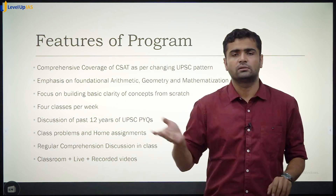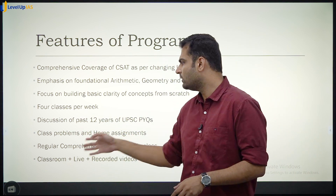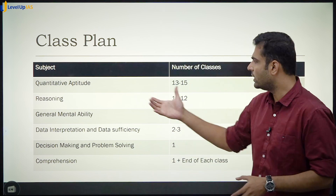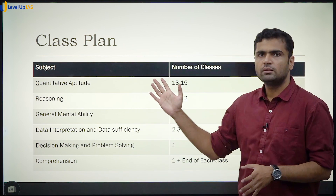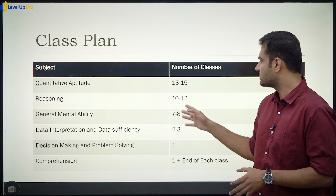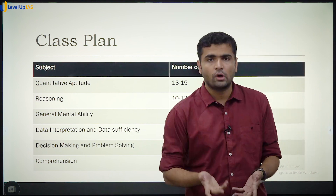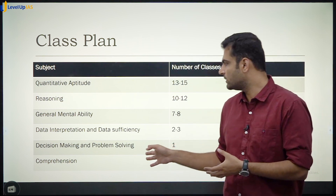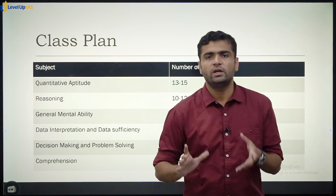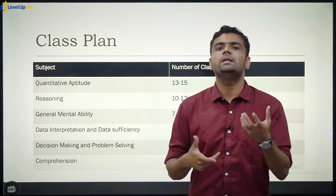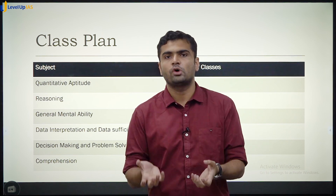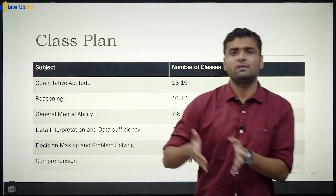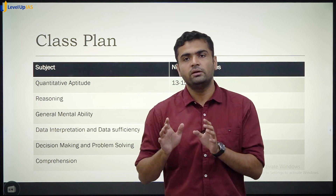You will of course be getting class problems and class handouts. Classes will be live as well as recorded videos. This is the rough plan: for quantitative aptitude, we will have 13 to 15 classes; reasoning, 10 to 12; mental ability, 7 to 8; data interpretation and sufficiency, 2 to 3; decision making, problem solving, and some other topics from which UPSC has not really been asking questions — for those we will give only one lecture. For comprehension, there will be one lecture where we understand what comprehension is, what UPSC is trying to gauge from those questions, and the different kinds of questions being asked. Then at the end of each class after that, we will have comprehension practice.